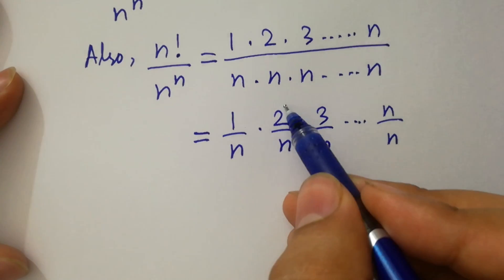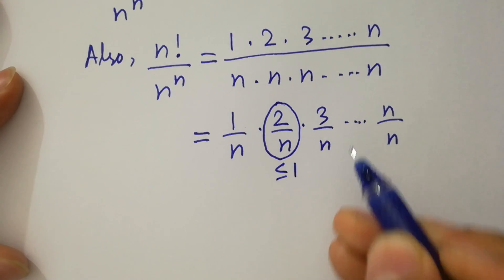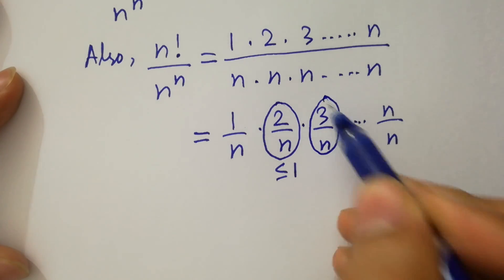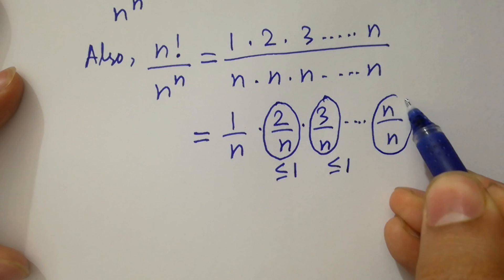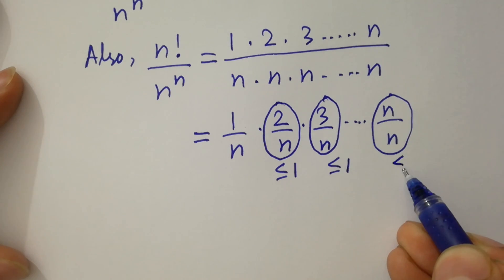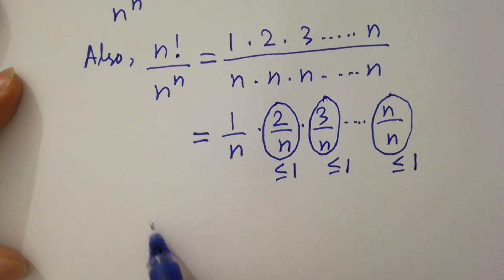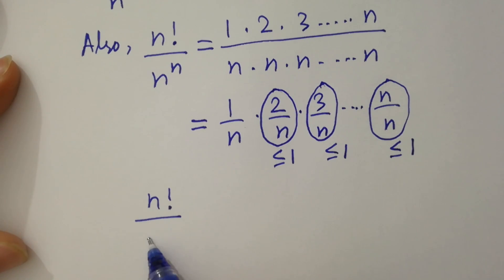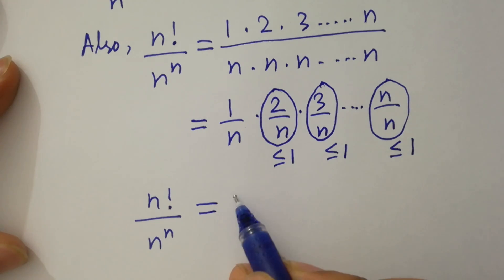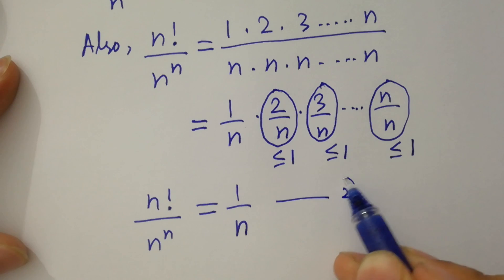Since 2/n is less than or equal to 1, and 3/n is less than or equal to 1, and n/n is also less than or equal to 1, then n factorial over n to the power n will be less than or equal to 1/n. Let's call this the second equation.